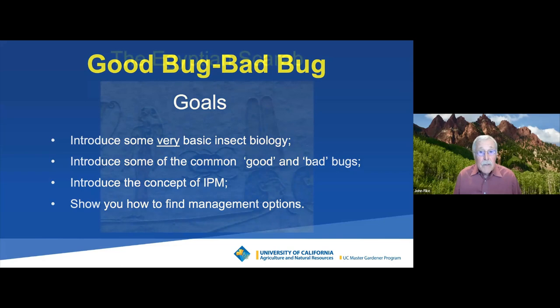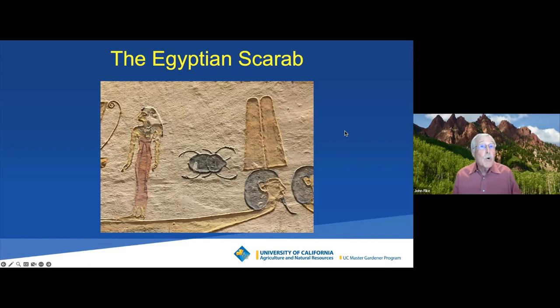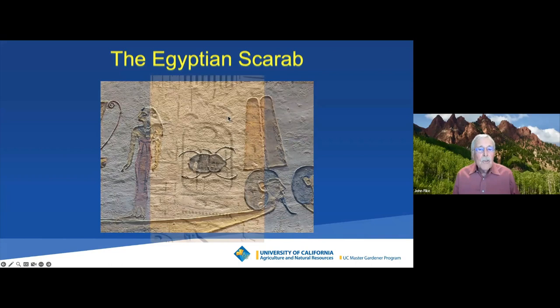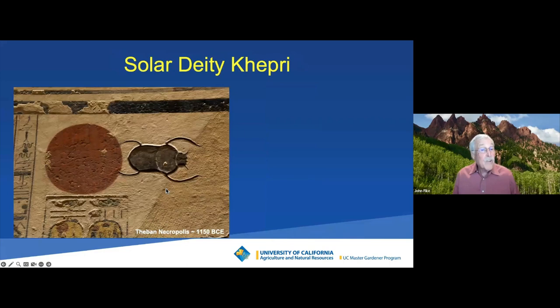I want to start with a historical perspective. I was in Egypt a few years ago and being a science geek, I noticed right away that on many of the walls, facades, and obelisks there was a depiction of a scarab beetle. Scarab is shorthand for the scientific name or group that this beetle belongs to. You could see it in part of a hieroglyphic, and one that really stuck with me came from the wall of the tomb of Ramses IV, from almost 3,000 years ago.